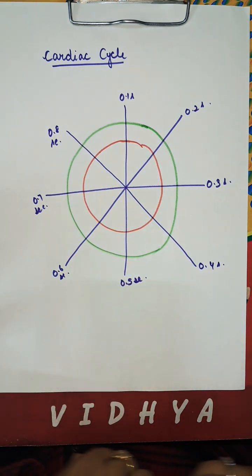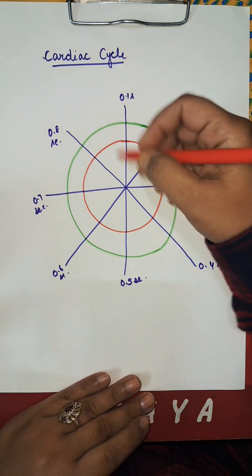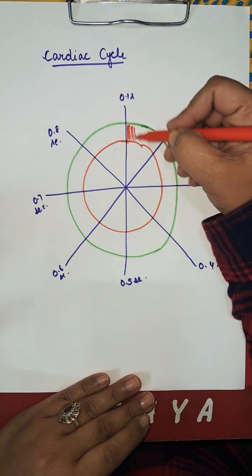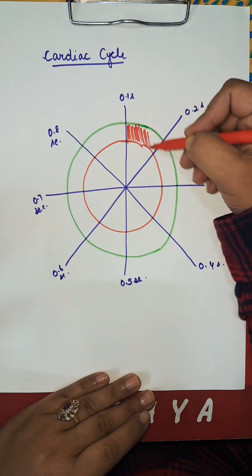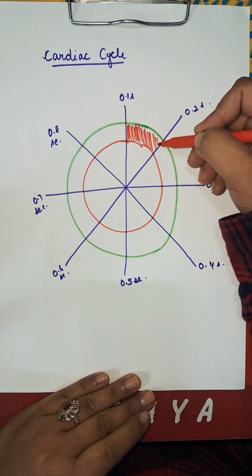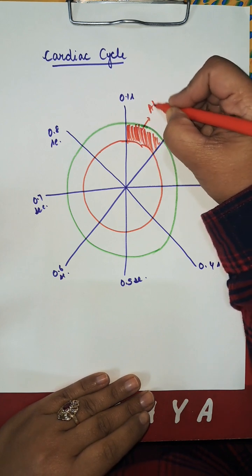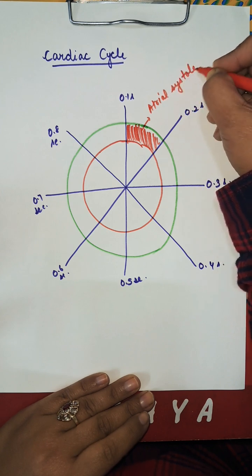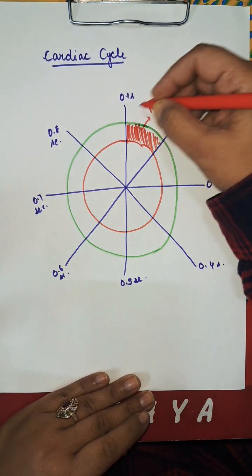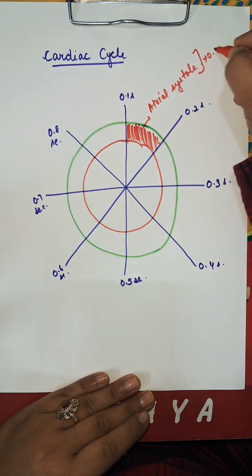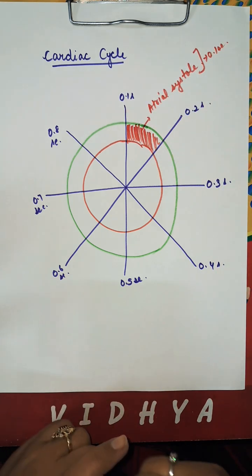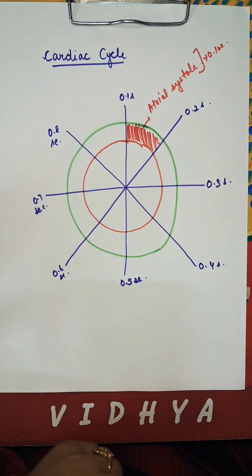Now color one part — we can do it here. This is atrial systole, and it is about 0.1 second only.